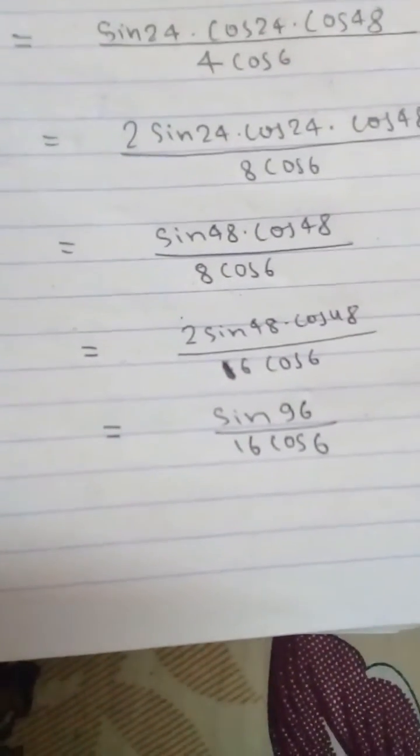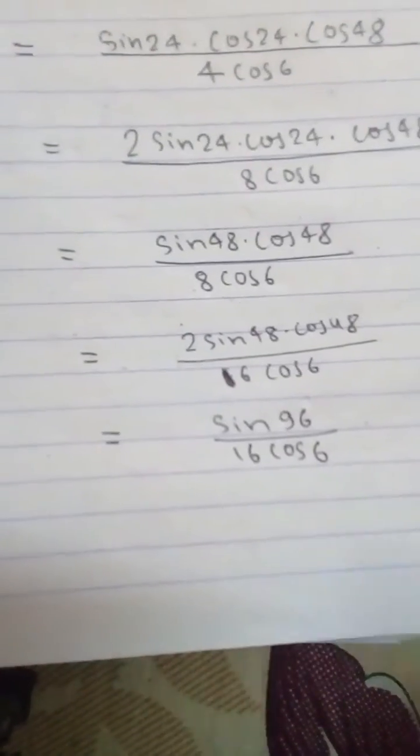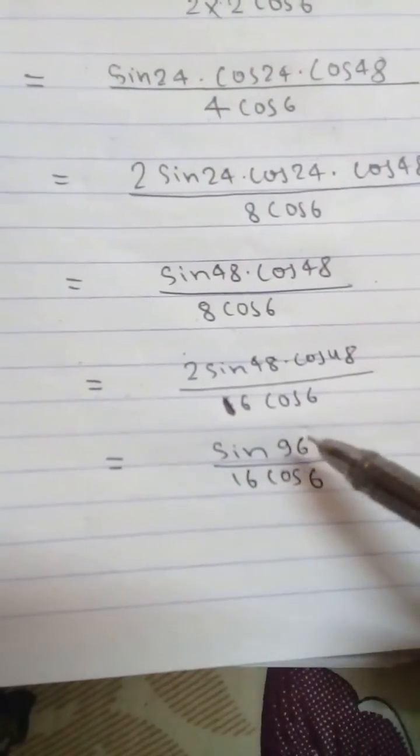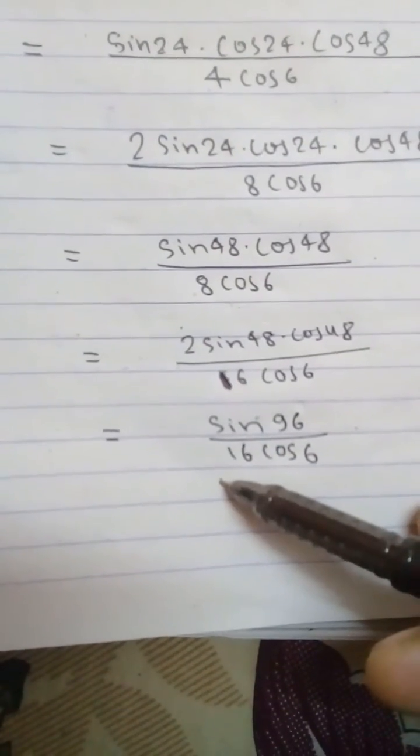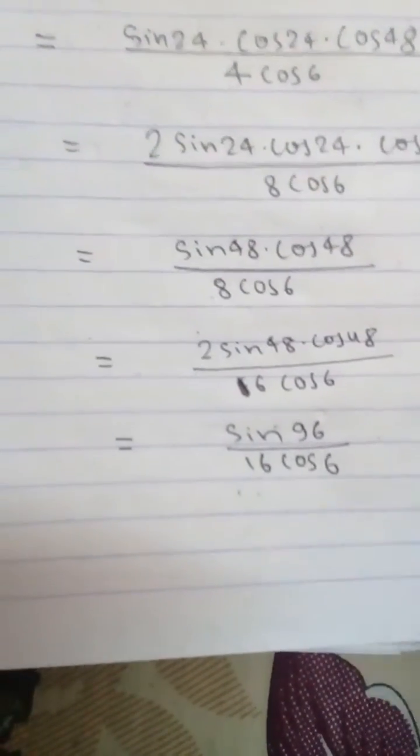Then this can be converted into cos6. If cos6 and cos6 get cancelled with each other, then we finally get 1 by 16.